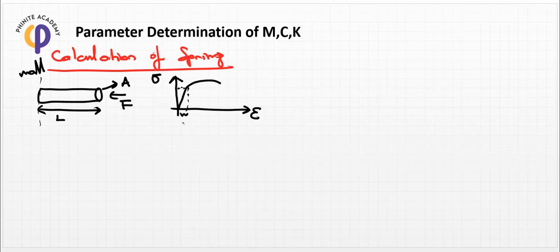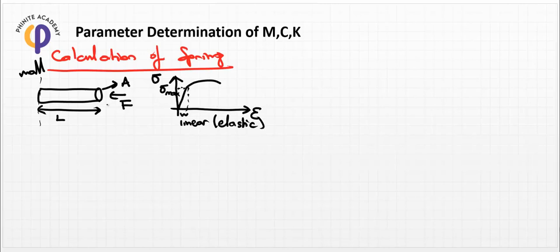This linear region is the elastic part of the material. If we elongate the object within this range and then remove the force F, the object returns to its normal position. How can we calculate the spring factor in real life? We need to choose shape parameters (dimensions) and select the material.